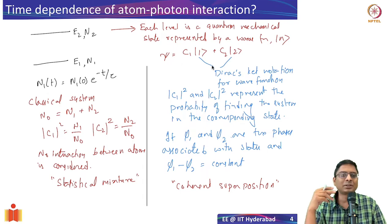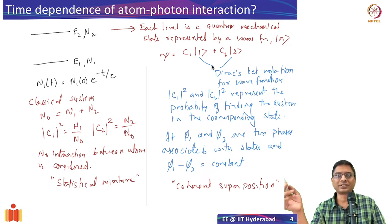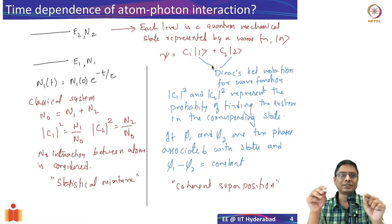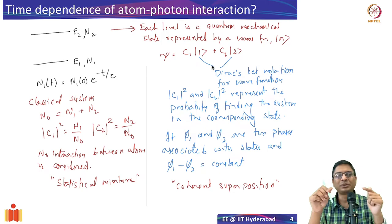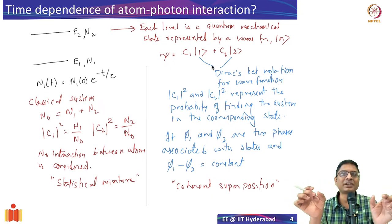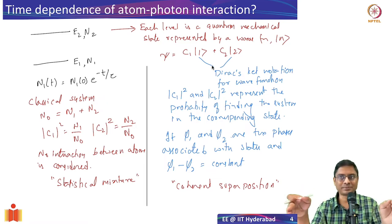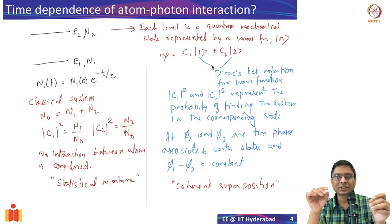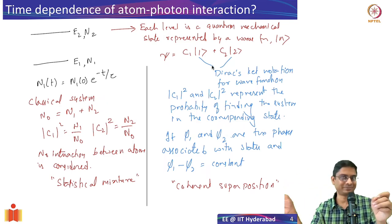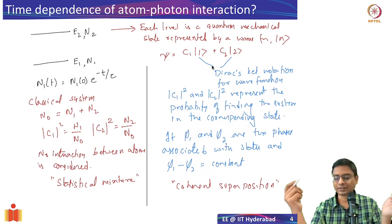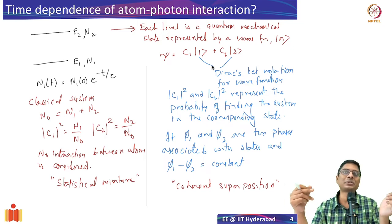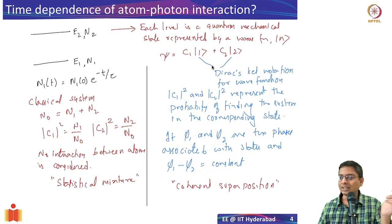An analogy is optical interference. If you have two separate laser beams, they will not interfere because there is no fixed phase relation. But if you take one beam and pass it through two slits, the secondary beams derive from the same source and will interfere, forming fringes. Depending on whether waves constructively or destructively add, you get fringes. Similarly, if your wave functions also have a fixed phase relation, interesting effects occur.